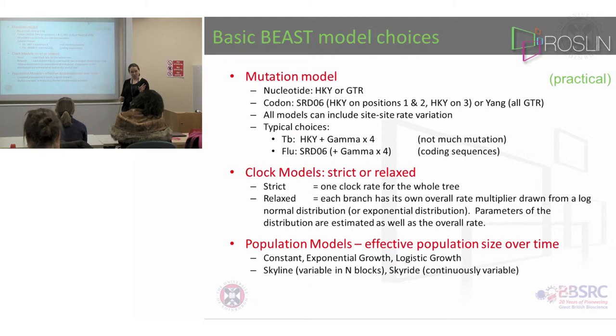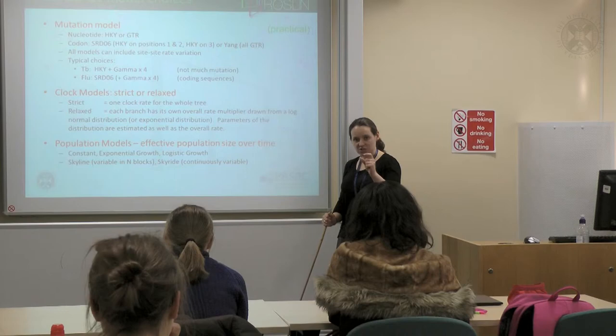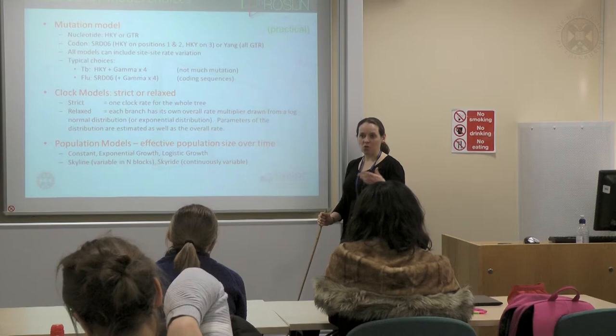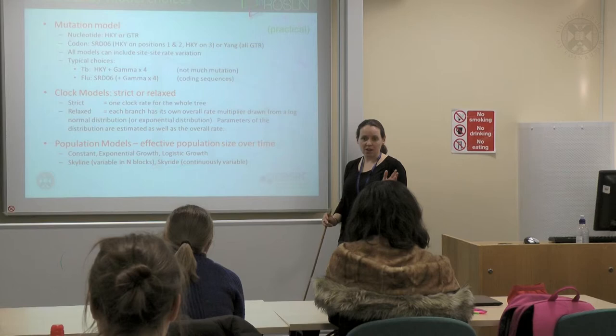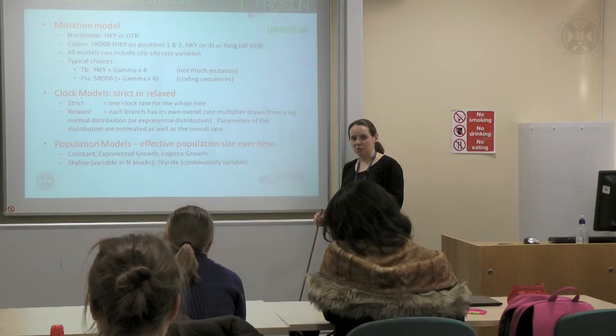The clock model: the mutation model just describes A to G, C to T rates. The clock model gives you the overall average number of substitutions per site per year. You could have one clock model for the entire tree, mostly because you might think all the sequences are from the same population and the same host, so we're going to have one clock model to describe everything.